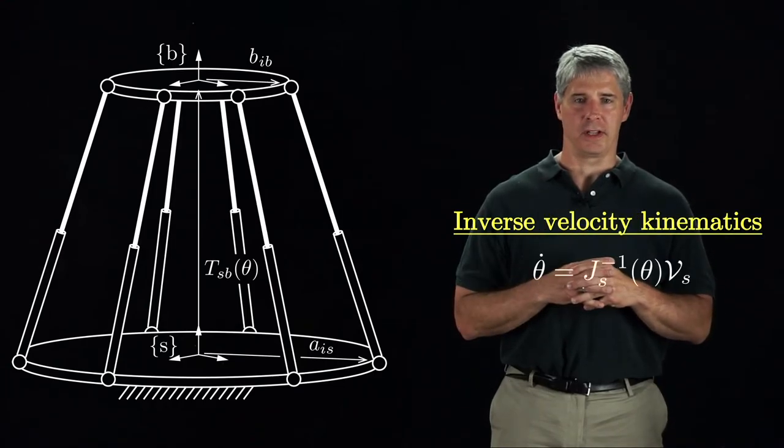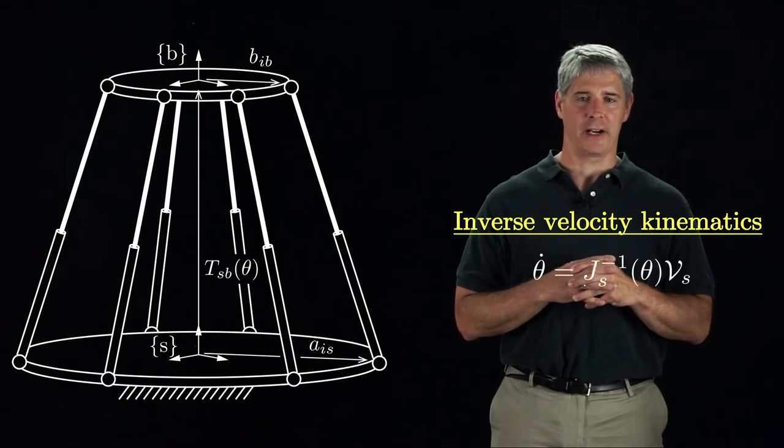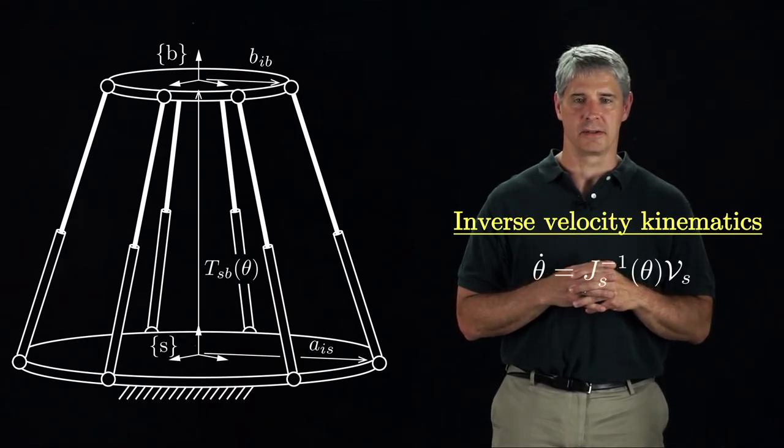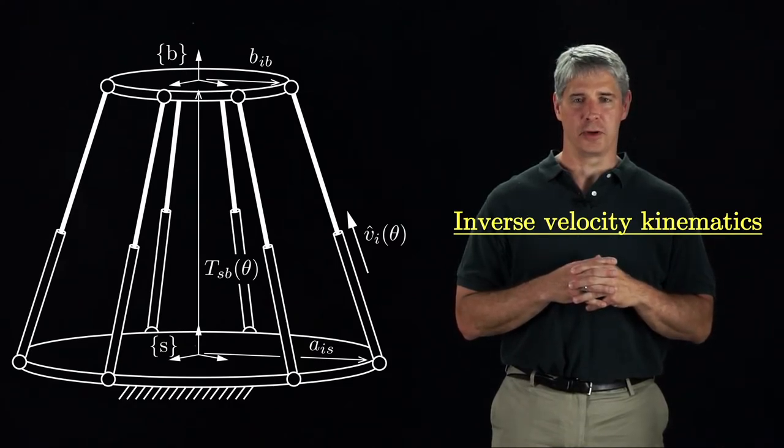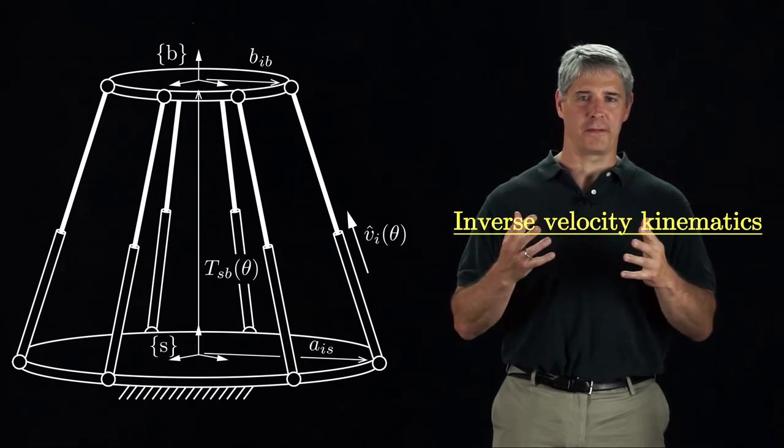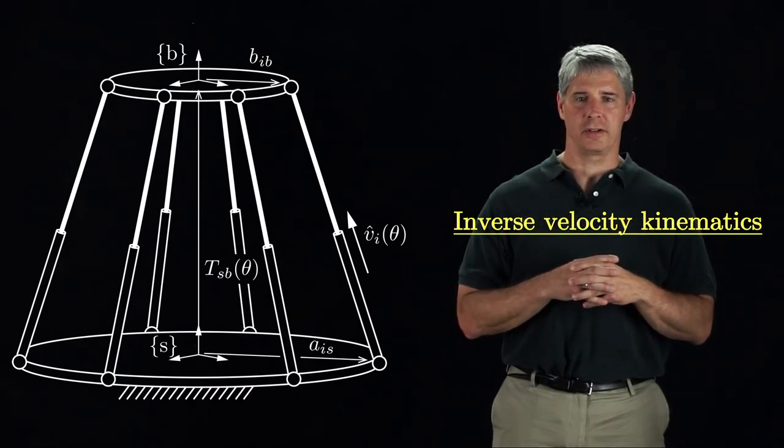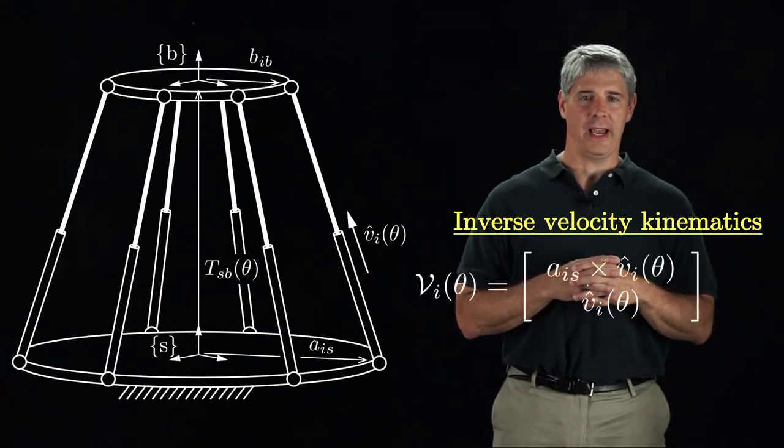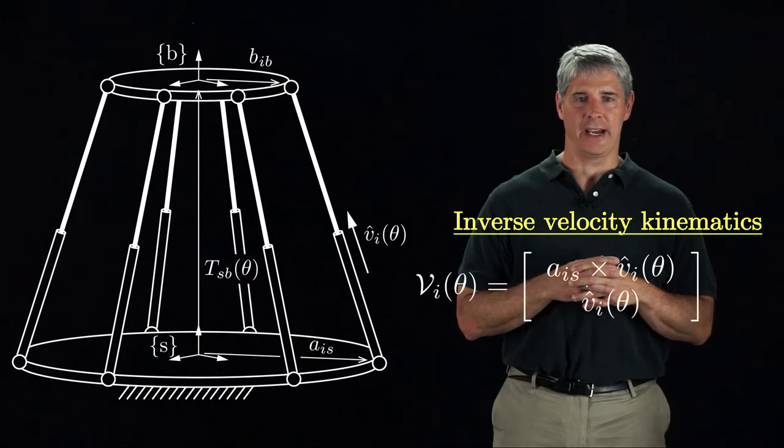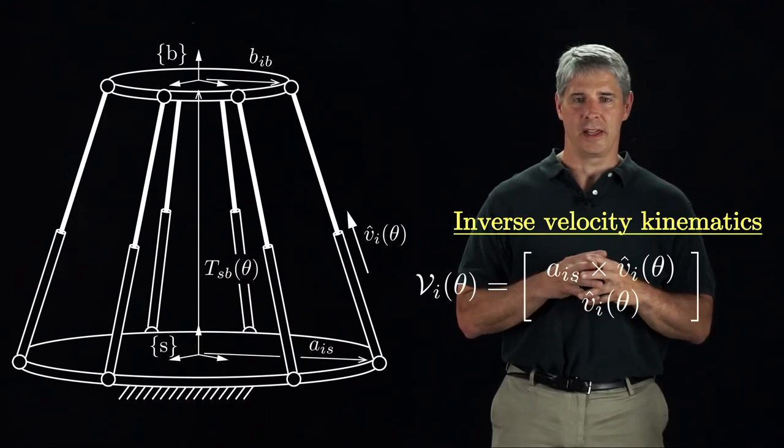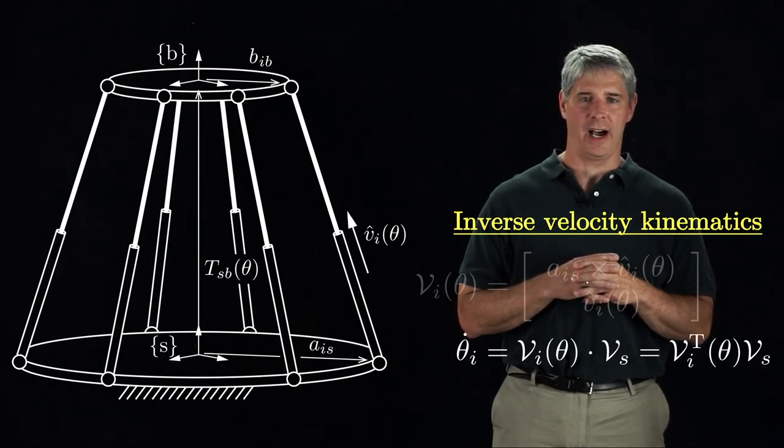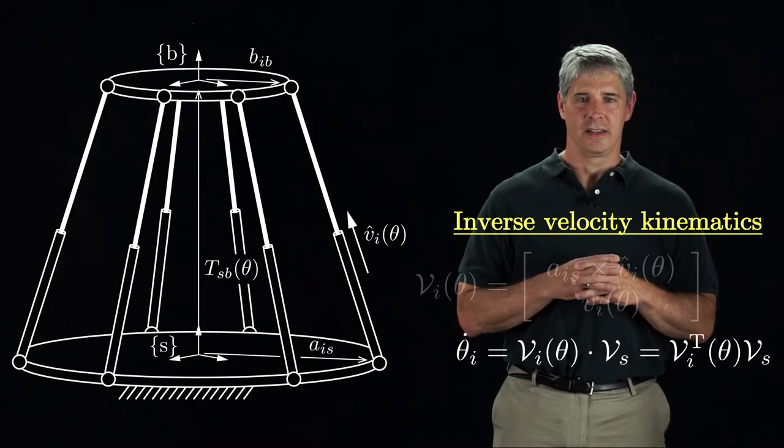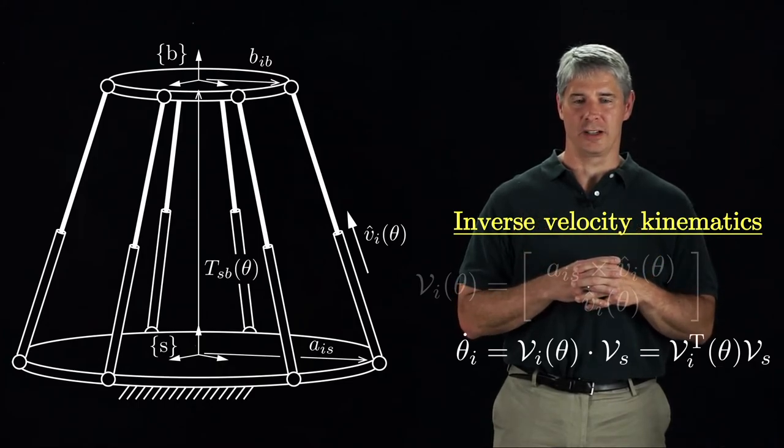Next let's address the inverse velocity kinematics, mapping the end effector twist to the joint velocities. Let V hat i be the unit 3 vector aligned with the direction of positive motion of the i-th axis. Skipping the straightforward derivation, we can define a screw axis V i expressed in the S frame with the linear component V hat i and the angular component A i s cross V hat i. Then the joint velocity theta dot i is equal to the screw axis V i dotted with the spatial twist V s.